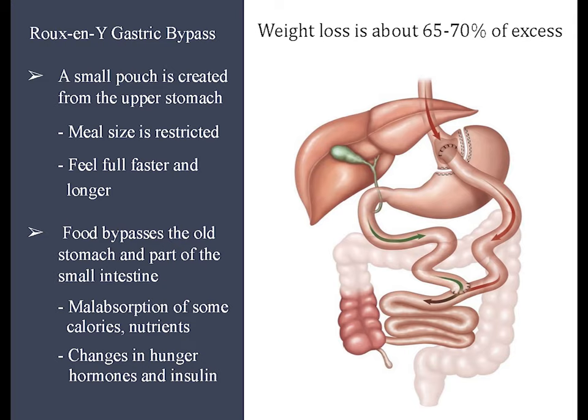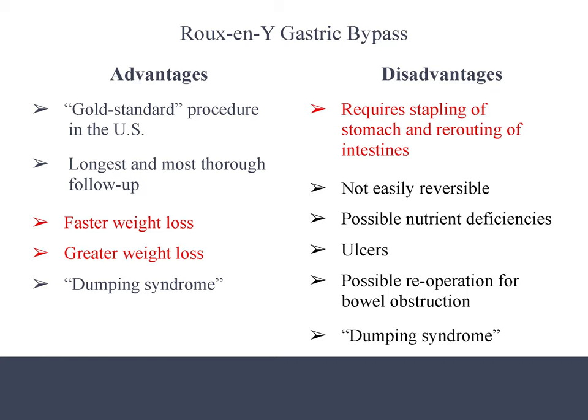Here's an example of the gastric bypass. The expected weight loss is about 65 to 70% of your excess weight. It creates a small stomach pouch which restricts the amount of food you can eat and allows you to feel full faster and longer. The food bypasses the old stomach and part of the small intestine, which creates malabsorption of some calories and nutrients and changes the hunger hormones and insulin. Advantages include that it has been performed since the 1960s and is considered the gold standard, with the longest and most thorough follow-up. The weight loss is faster and slightly greater, and dumping syndrome means you don't tolerate sweets well, which tends to help you avoid them.